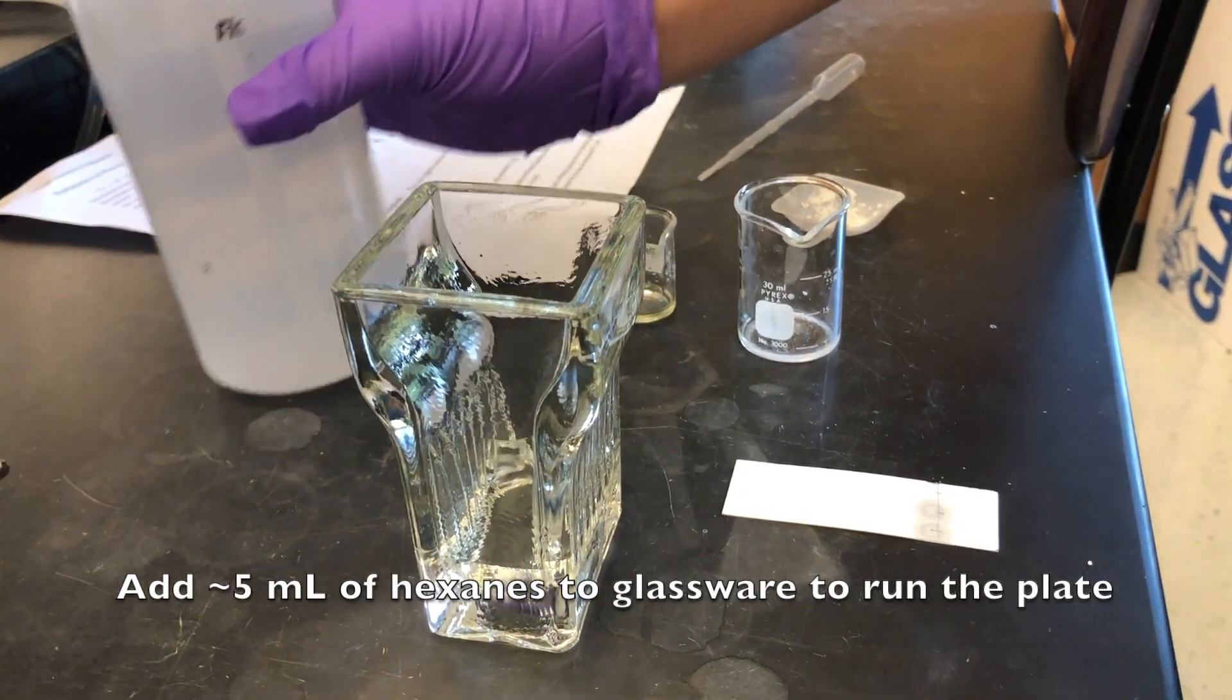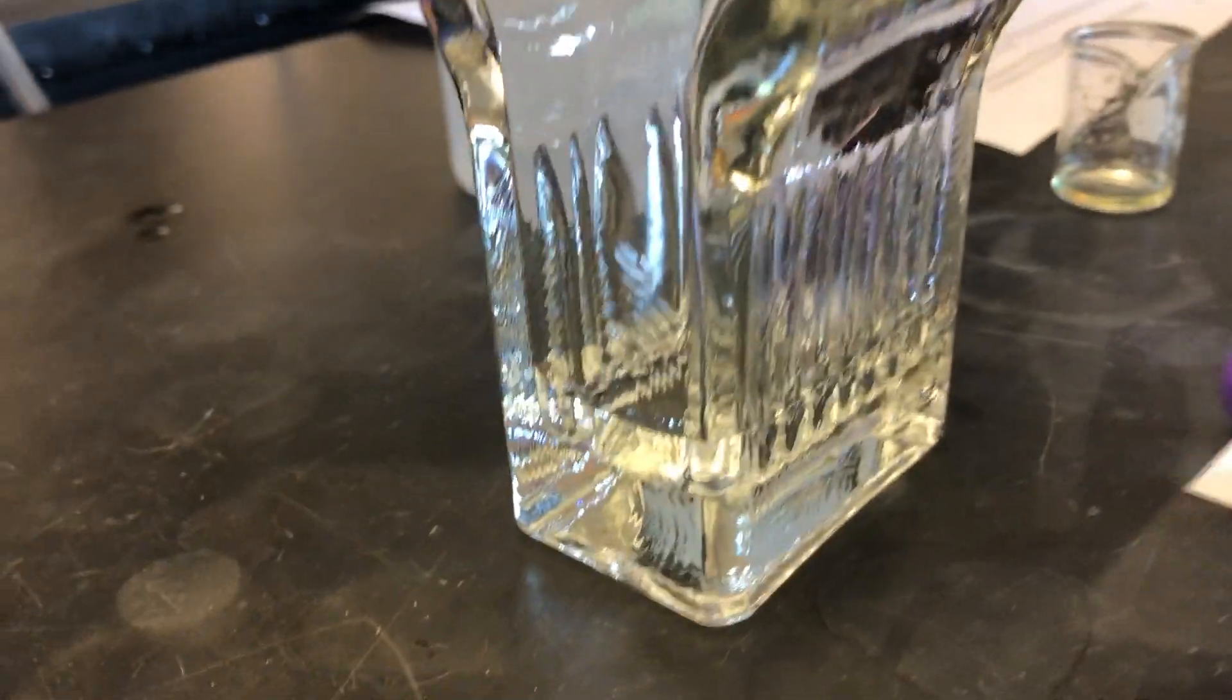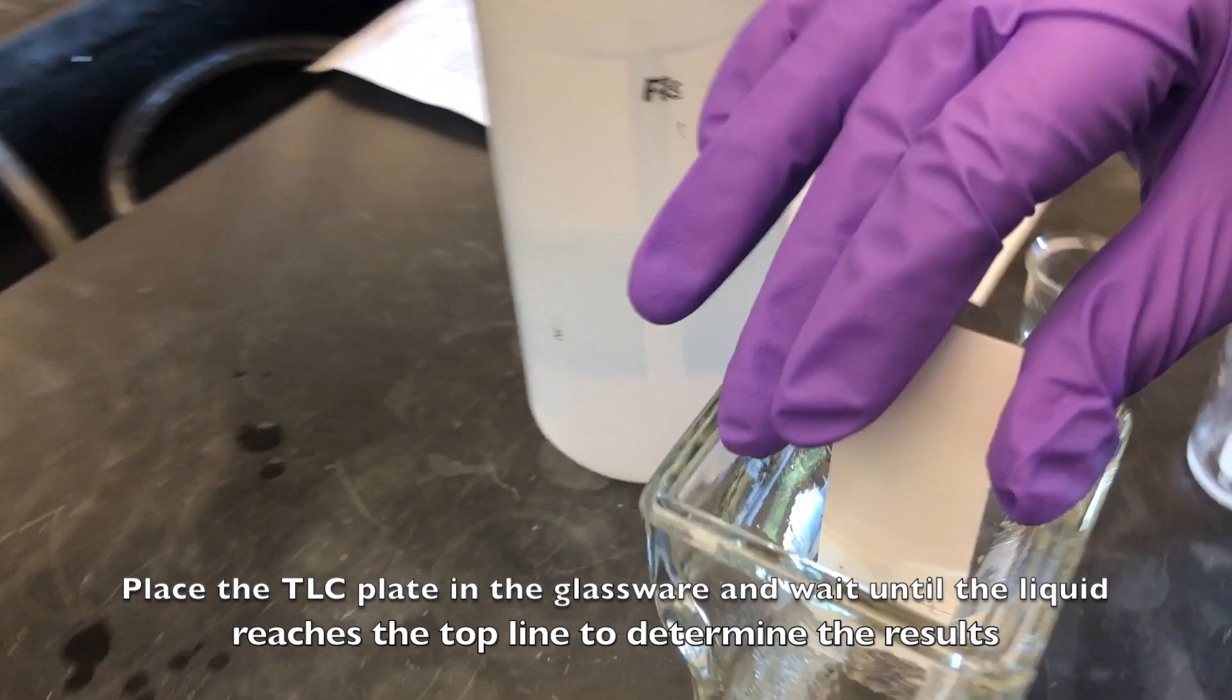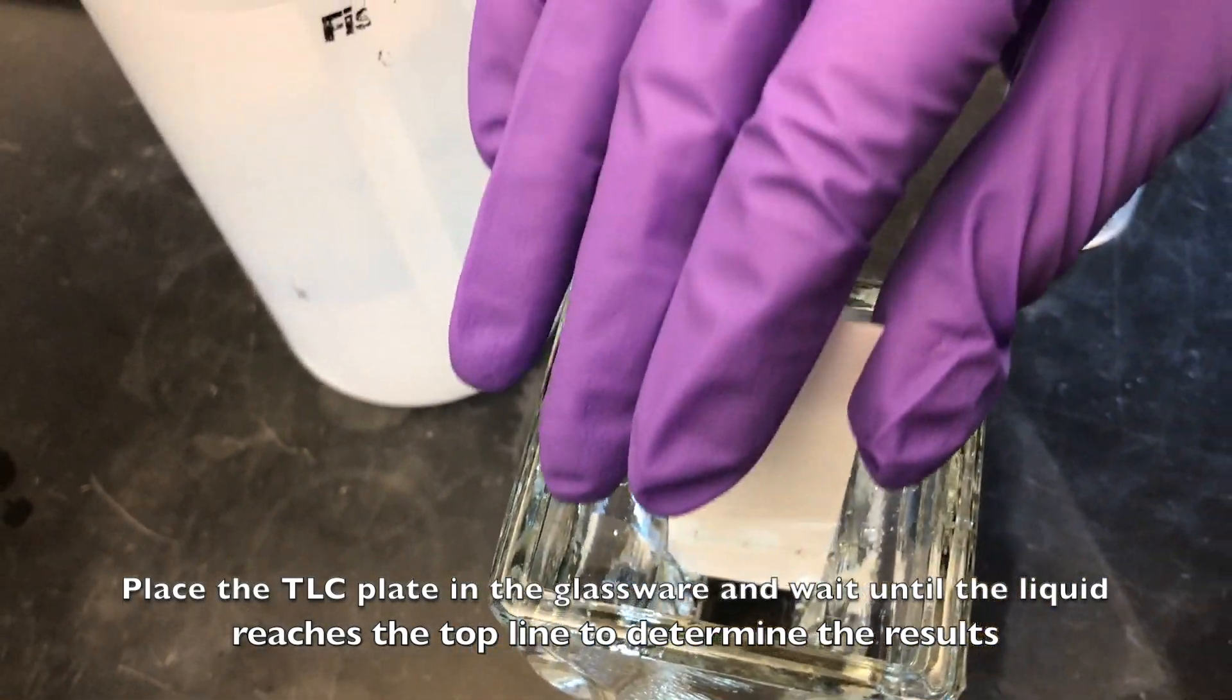Add 5 milliliters of hexanes to the glassware to run the plate. Place the TLC plate in the glassware and wait until the liquid reaches the top line to determine the results.